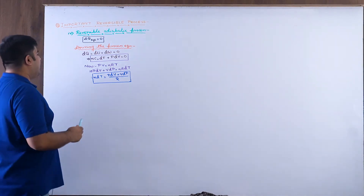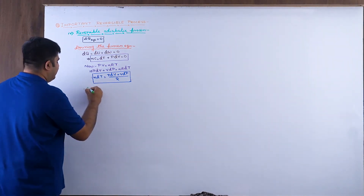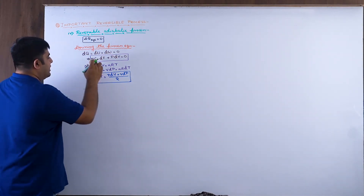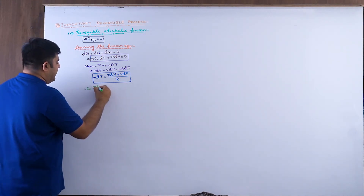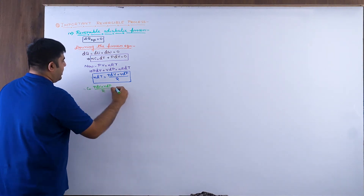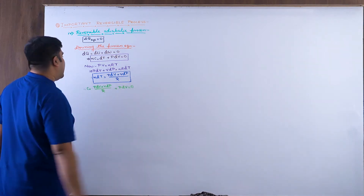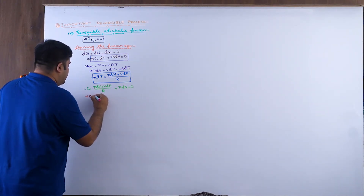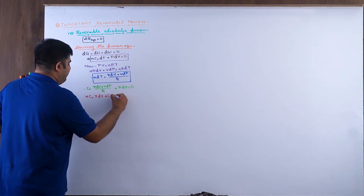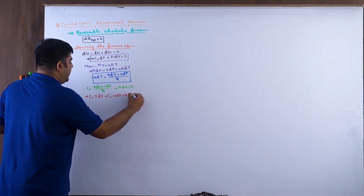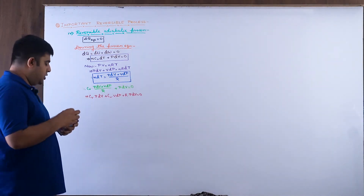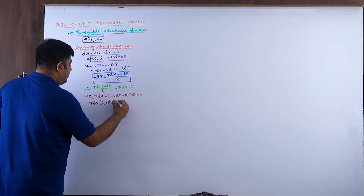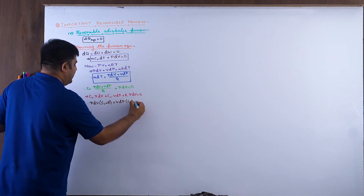Now substituting n dT: Cᵥ × (p dV + V dp)/R + p dV = 0. Multiplying through by R: Cᵥ(p dV) + Cᵥ(V dp) + R(p dV) = 0. This gives: p dV(Cᵥ + R) + V dp × Cᵥ = 0.